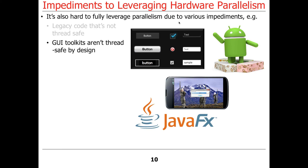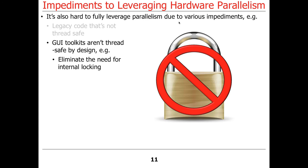Another impediment is that GUI toolkits weren't designed to be thread-safe. Almost every GUI framework in widespread use is not thread-safe by design — only a single designated thread, like the main thread or user interface thread, can actually access GUI toolkit components such as views, dialogues, buttons, edit text, and text views. One reason is that by not allowing more than one thread to access these GUI widgets, it eliminates the need to put any locks in the GUI toolkit implementation, making the code smaller and faster.